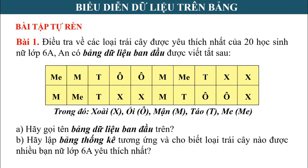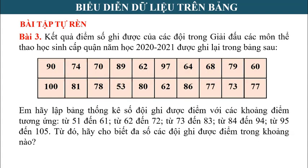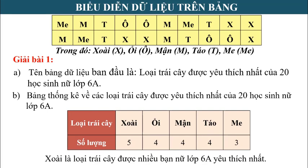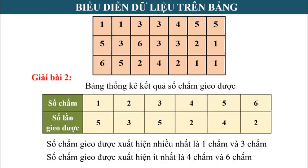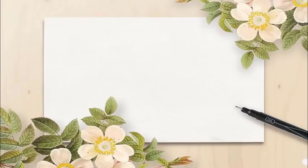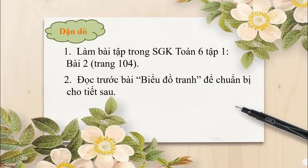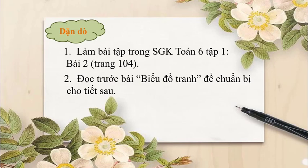Sau đây là phần bài tập tự luyện. Các em hãy tạm dừng video để tự làm bài tập và theo dõi kết quả ở phía sau nhé. Sau khi xem xong video, các bạn có thể tự luyện thêm bằng cách làm bài tập 2 trang 104 trong sách giáo khoa Toán tập 1. Và các bạn đọc trước bài biểu đồ tranh để chuẩn bị cho tiết học sau nhé.